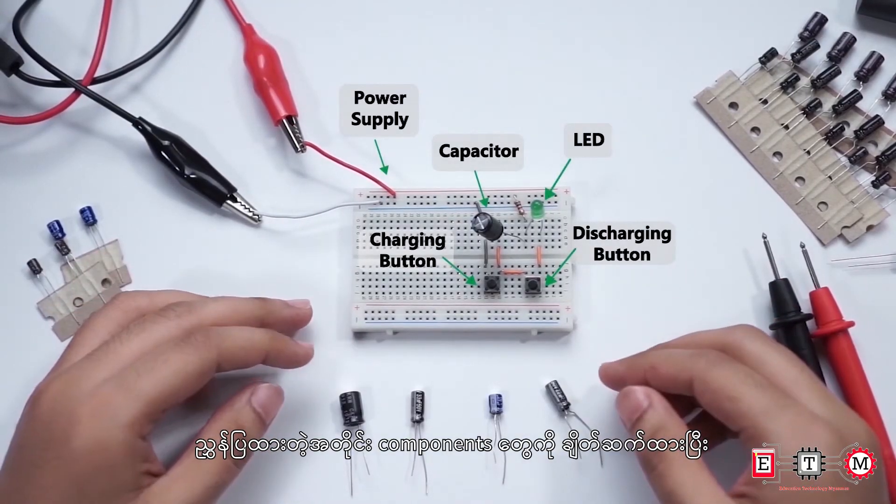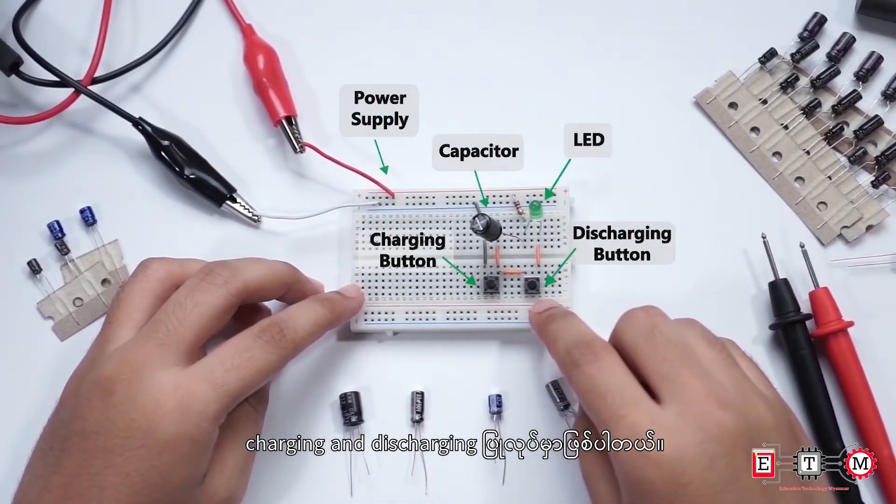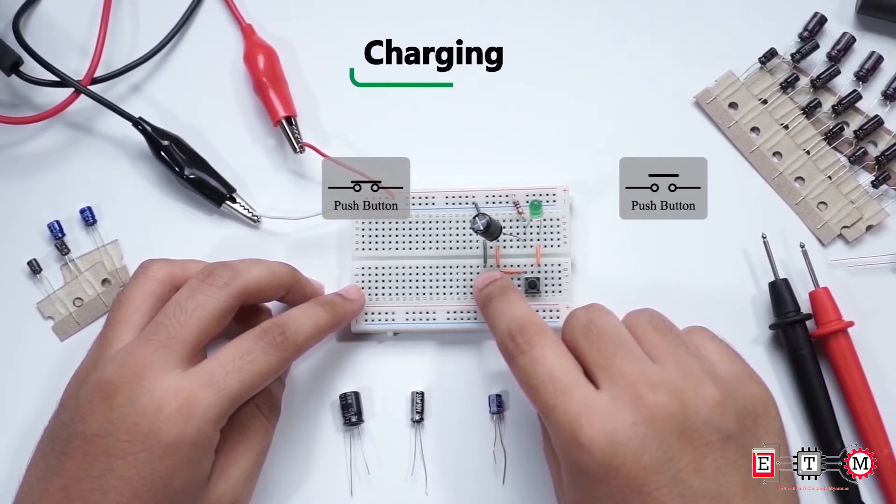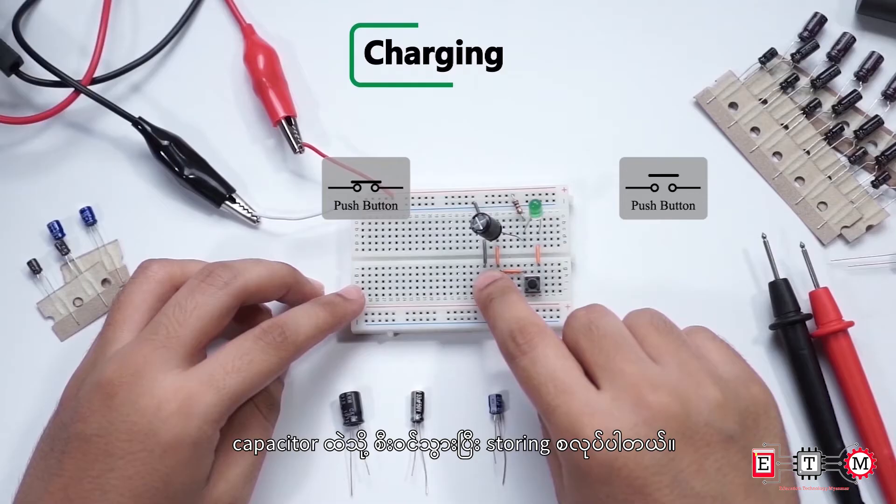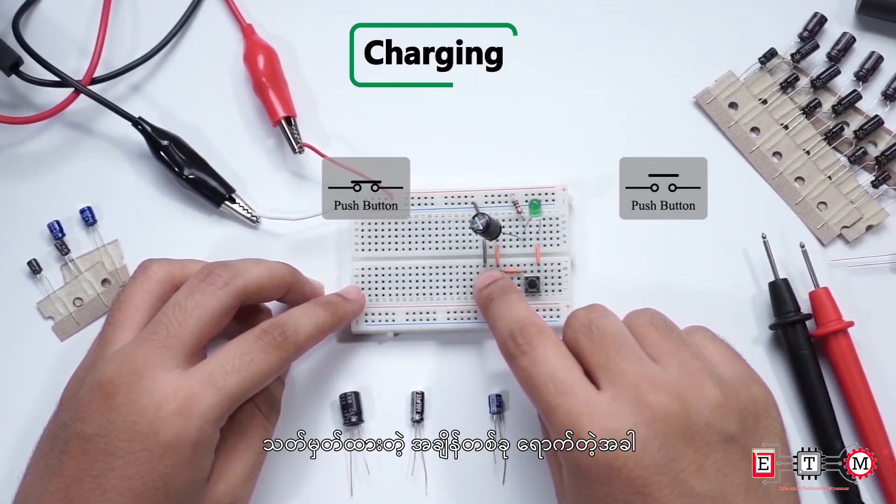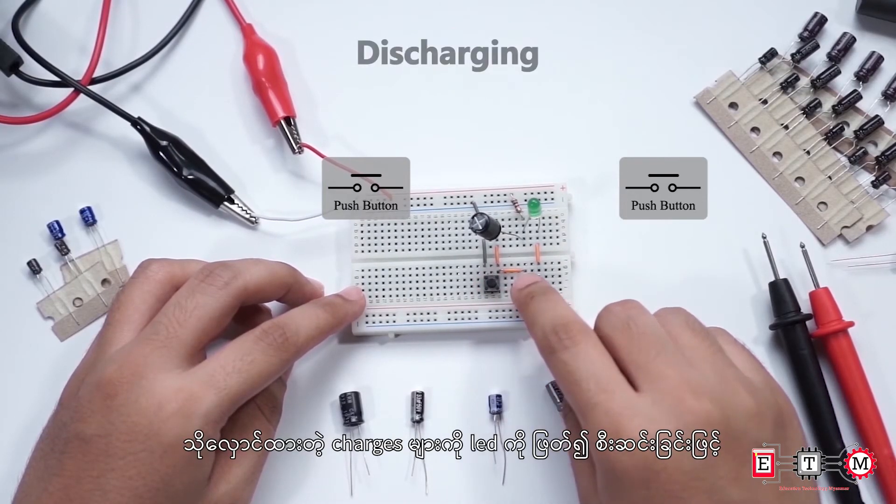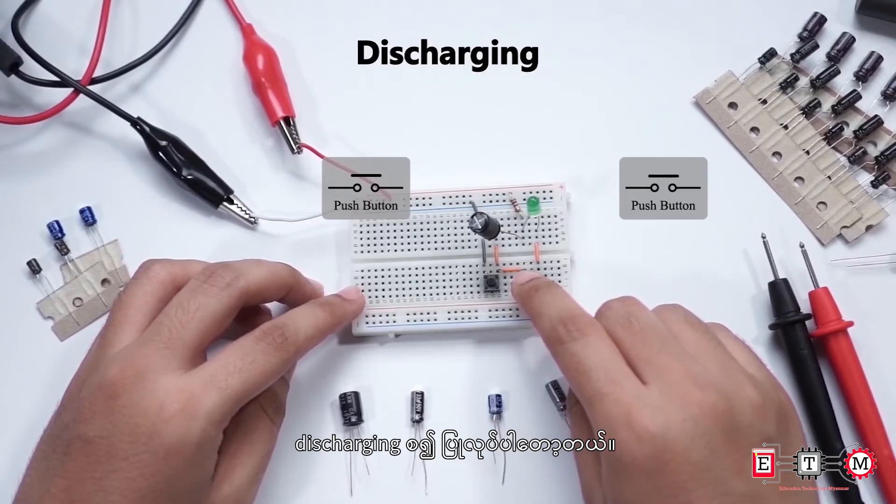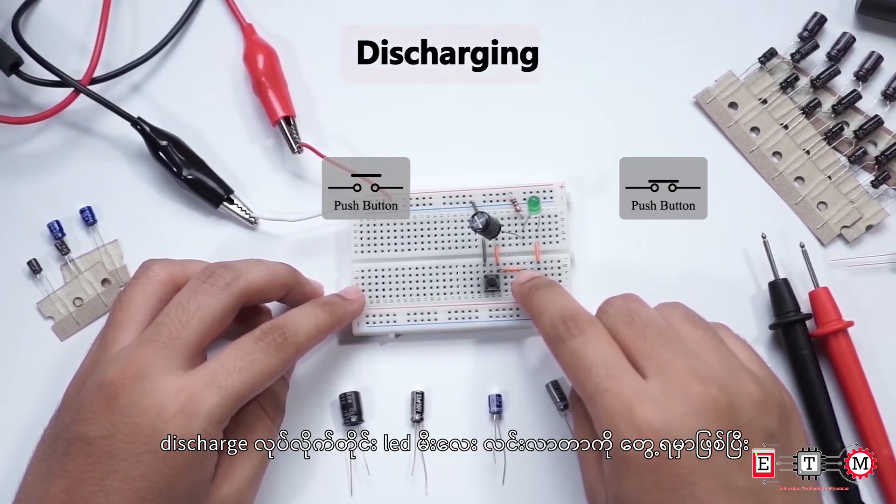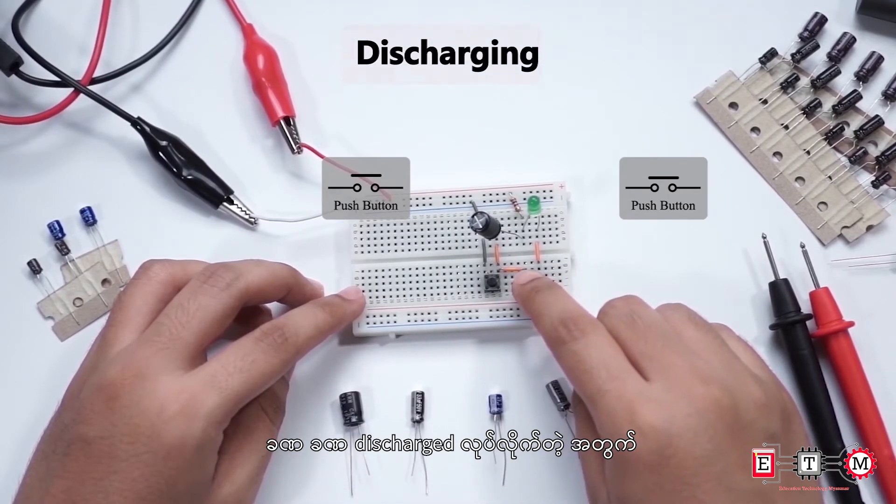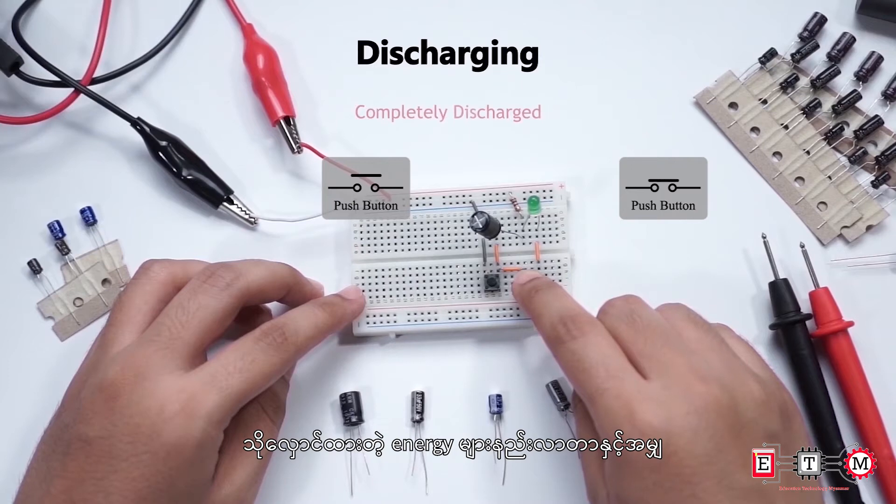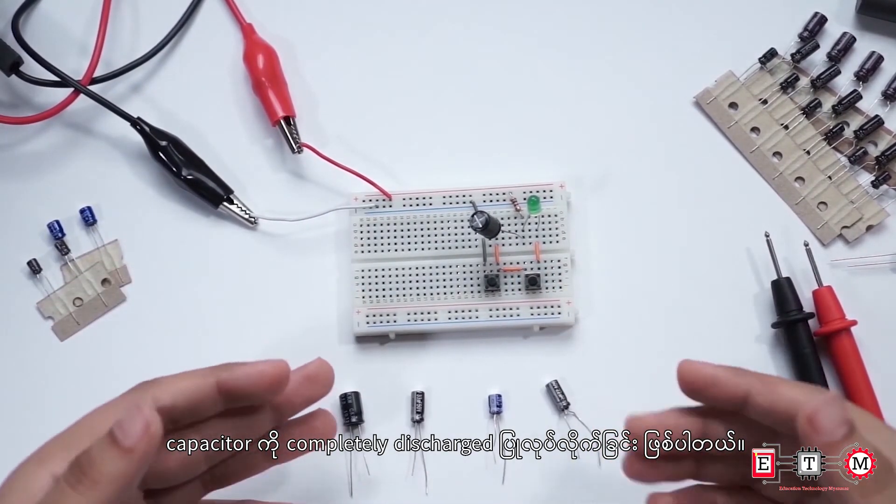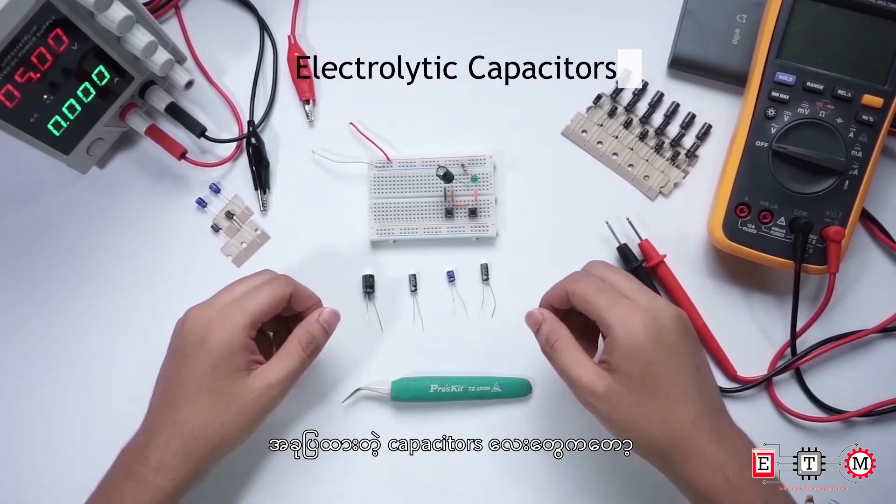This component demonstrates charging and discharging. When the push button is pressed, it charges as power supply provides charges to the capacitor for storing. When released, the stored charges discharge through the LED. During discharging, energy is released gradually until the capacitor is completely discharged.